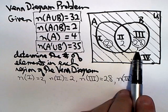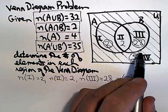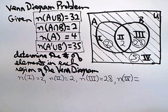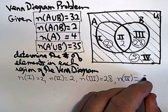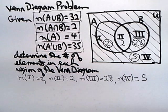Well, 2 plus 28 is 30. That means the region out here must have 5 elements. So those 3 circled elements are in the union of A complement and B complement. So the number of elements in region 4 is 5. And we've answered that question.